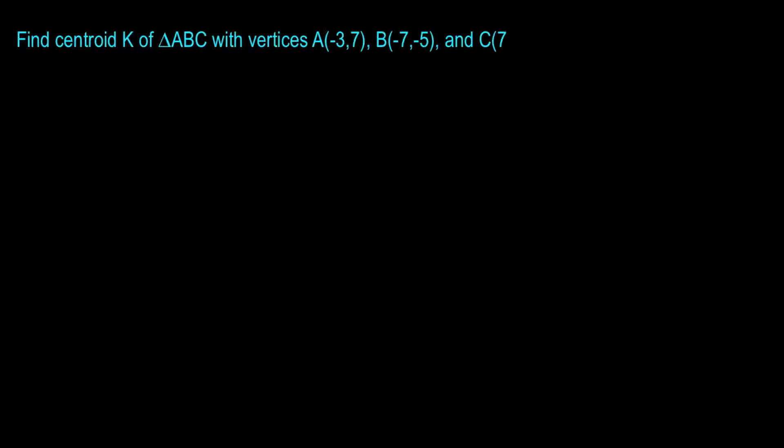So looking at our first problem, it says find the centroid K of triangle ABC with vertices A(-3,7), B(-7,-5), and C(7,4).